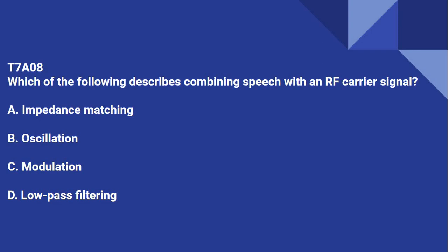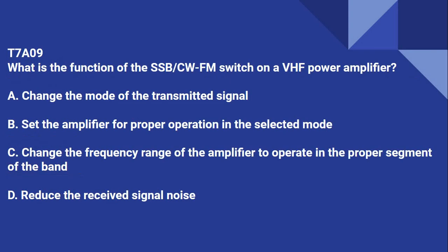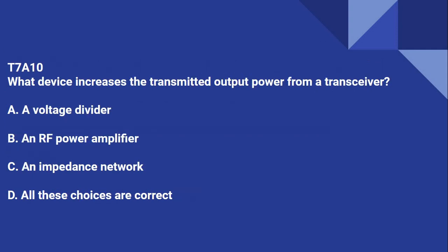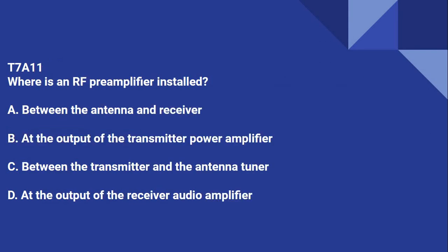T7A08: Which of the following describes combining speech with an RF carrier signal? That is modulation. T7A09: What is the function of the single sideband/CW/FM switch on a VHF power amplifier? It sets the amplifier for proper operation in the selected mode. T7A10: What device increases the transmitted output power from a transceiver? An RF power amplifier. T7A11: Where is an RF preamplifier installed? Between the antenna and the receiver.